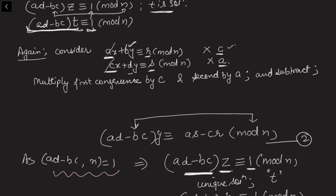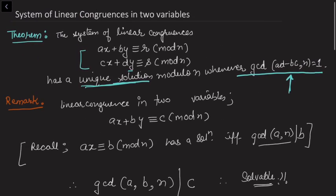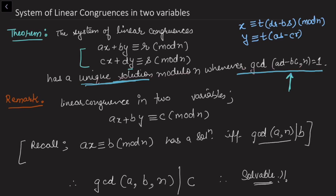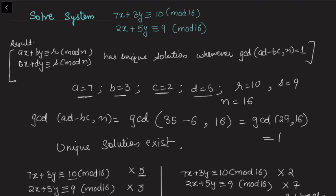This establishes the theorem. The solutions are x ≡ t(dr - bs) (mod n) and y ≡ t(as - cr) (mod n), and both are unique since gcd(ad - bc, n) = 1. The variable t represents the solution of the auxiliary congruence in each case. If there is any confusion about whether t is the same in both, you may call the second one t′; it doesn't matter because each was found by eliminating the other variable.